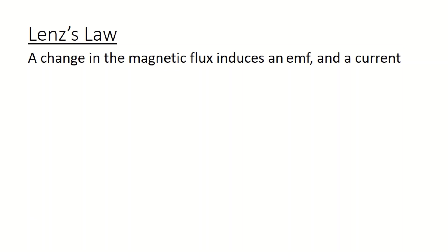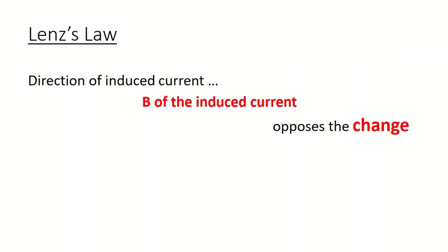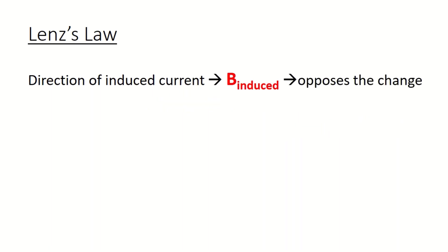Lenz's law says that a change in the magnetic flux induces an emf and a current — of course, if you have a closed loop. The direction of the induced current is such that the magnetic field of this induced current opposes the change that caused it.